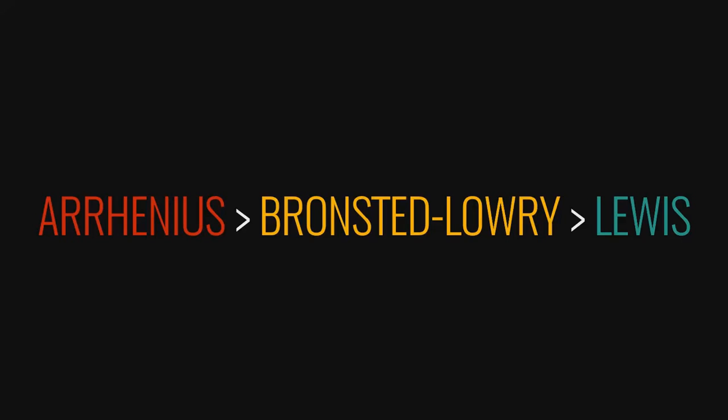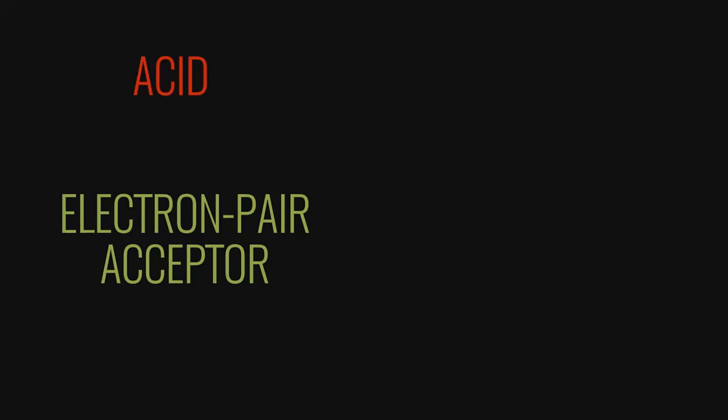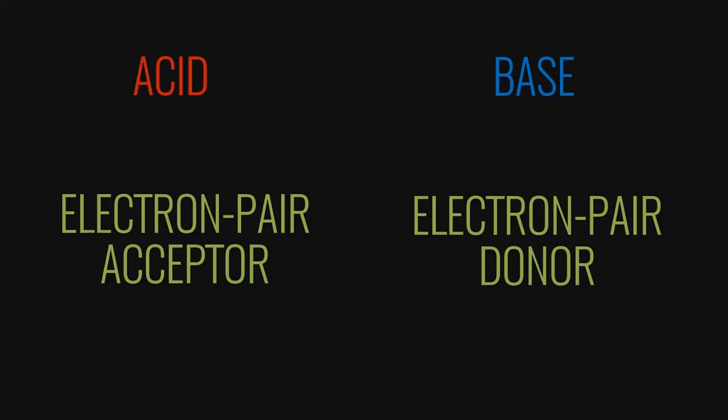When we normally refer to acids and bases, we tend to look at Bronsted-Lowry acids and bases, but some compounds are Lewis acids that are not Bronsted-Lowry acids. In the Lewis model, an acid is defined as an electron pair acceptor, and a base is defined as an electron pair donor. Let's take a look at an example to see what this all means.